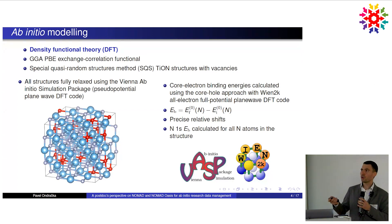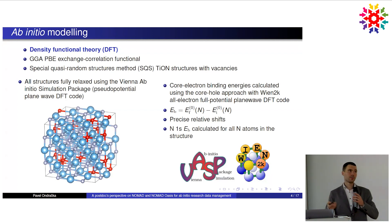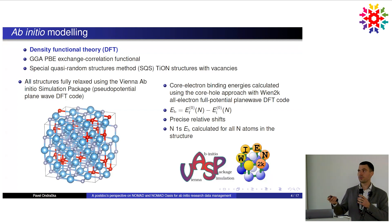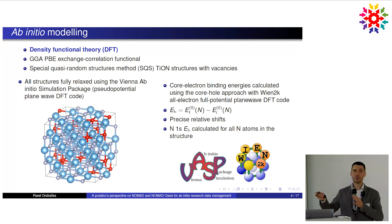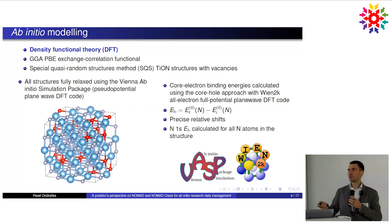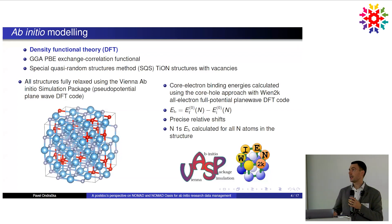From the NOMAD perspective, this involves standard DFT calculations with VASP and Wien2K, which are well supported. However, there is currently no concept of the core hole in the NOMAD meta-info. So if you upload these calculations, you end up with what looks like many identical calculations, because the input would be the same, the core hole would not be recognized, and you just end with different energies.